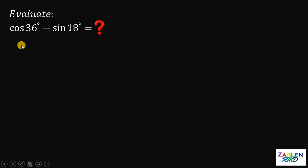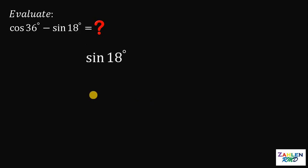The question is to evaluate cosine of 36 degrees minus sine of 18 degrees. This is very simple if we use a calculator, but in this video we will use another method. I provide two solutions: the first one is by using trigonometric identities, and the second one, a different method, using geometry. Now let's have our first solution.